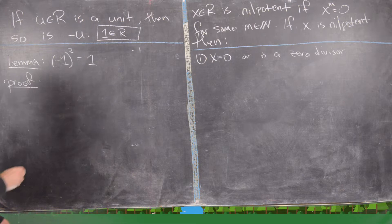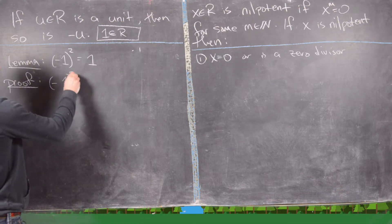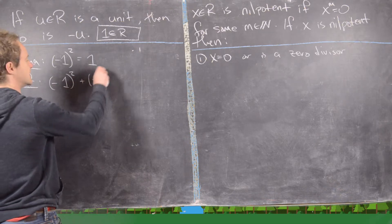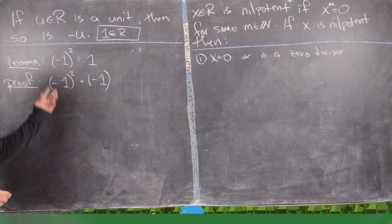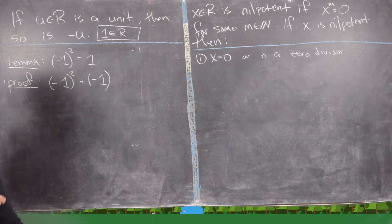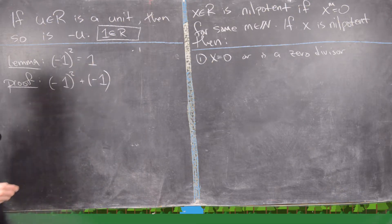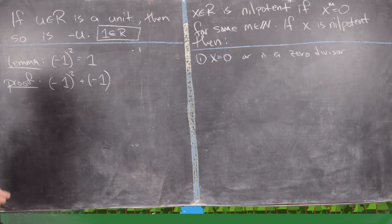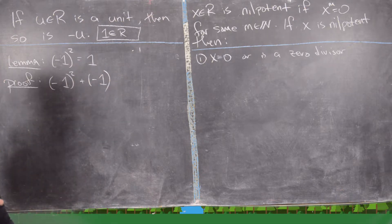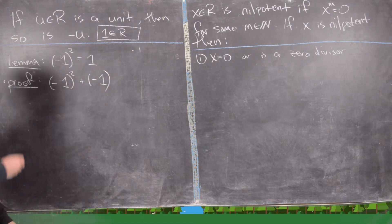This is equivalent to looking at negative 1 squared plus negative 1 and getting 0. So if this equation equals 0, that means negative 1 squared and negative 1 are additive inverses. But we already know that negative 1 and 1 are additive inverses. By the uniqueness of additive inverses — which holds because under addition we have an abelian group — we know these two are the same. Now we can use the fact that this is a ring to factor.